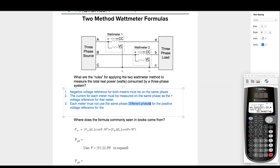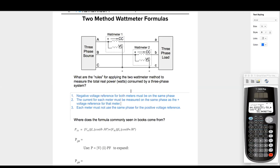Each meter must not use the same phase for the positive voltage reference. I like it. In other words, the positive voltage reference for wattmeter one is on A. And the positive voltage reference for meter two is on B. They are not on the same phase. Let's space these out so they are a little easier to look at.